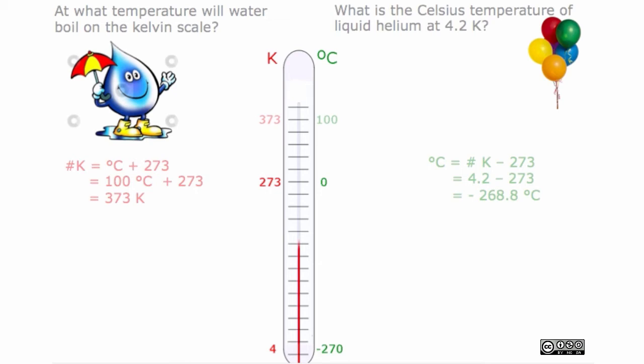Therefore, on the Kelvin scale, water will boil at a temperature of 373 Kelvin, and on the Celsius scale, liquid helium is equal to negative 268.8 degrees Celsius.